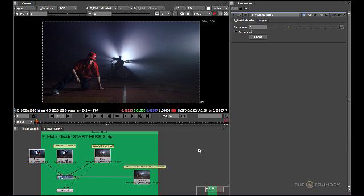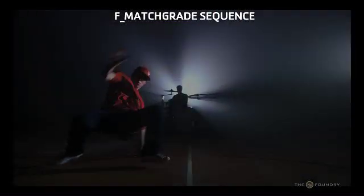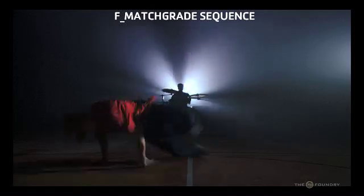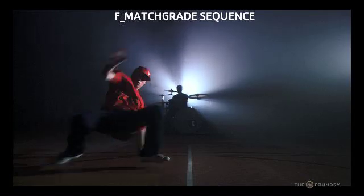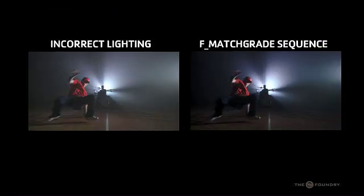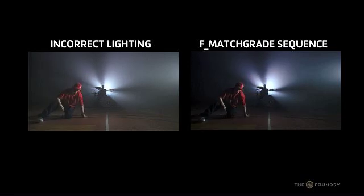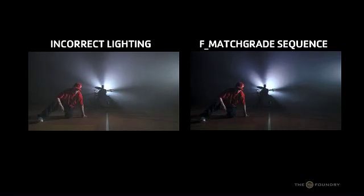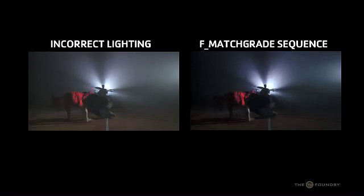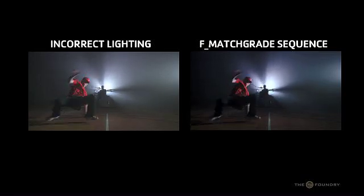Now we've used the MatchGrade node on this shot, let's get a render and view the entire sequence in motion. Playing through the render, you can see that just by applying a simple MatchGrade to the image sequence we have quickly and effectively color corrected the entire sequence to match the target sequence. If we do a before and after compare, on the left we have the original washed out sequence and on the right you can see the MatchGrade color corrected sequence and the difference between the two.